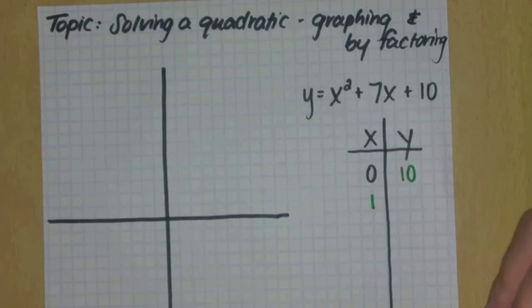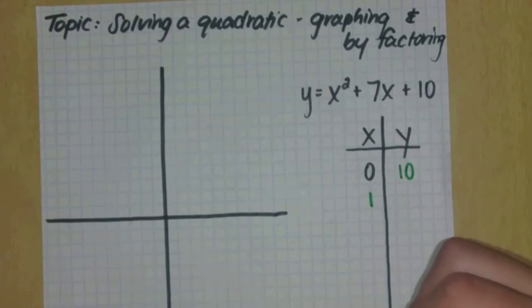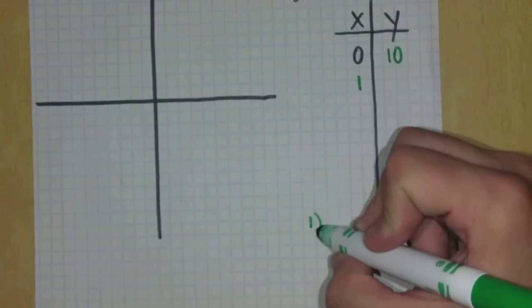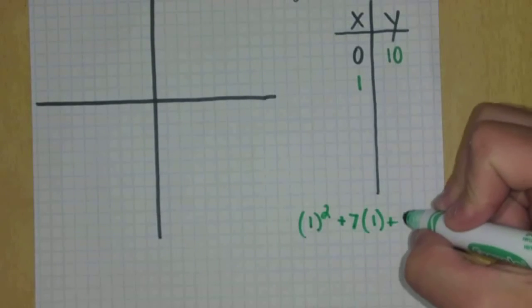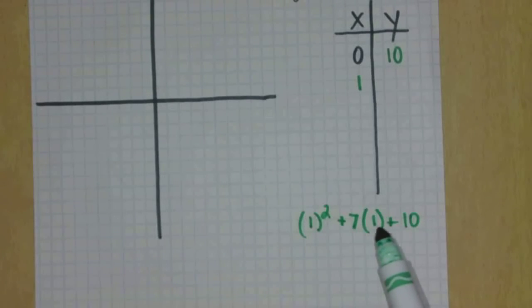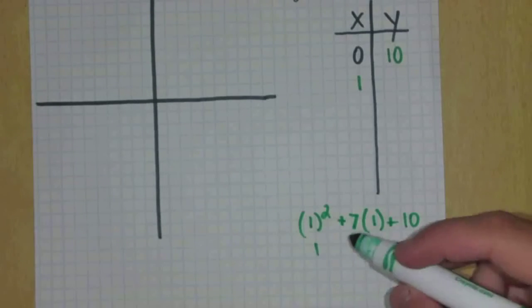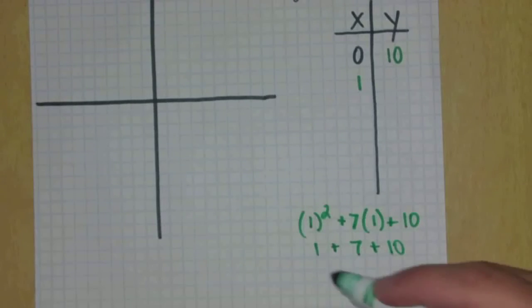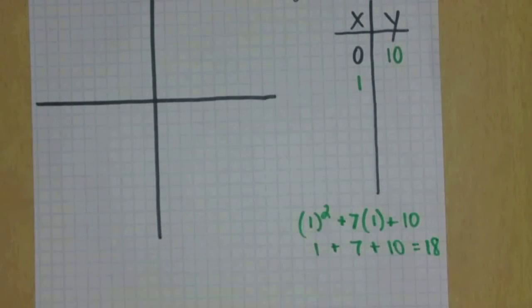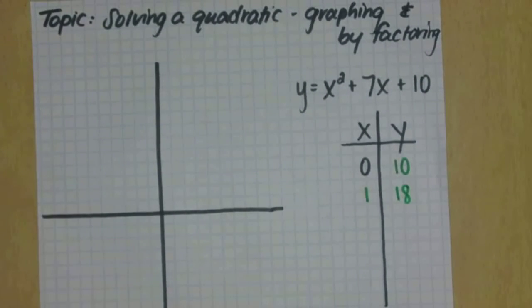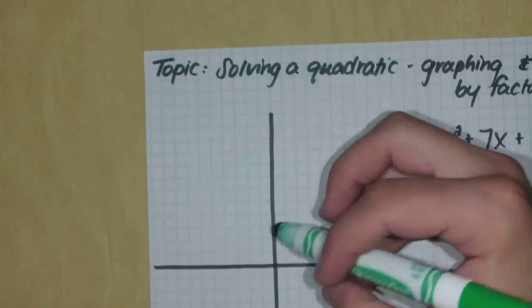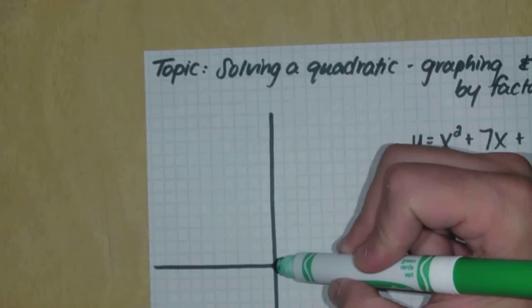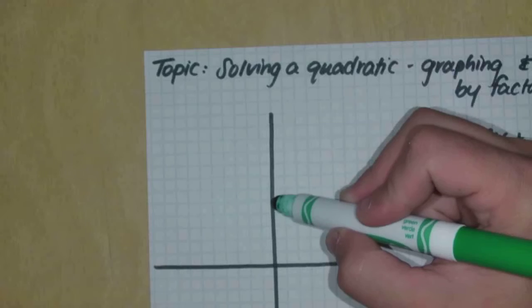Normally I try small positive numbers, so let's try X equals one. I like to plug everything in using parentheses — especially if you're using a calculator, you could type it all in directly. One squared is one, seven times one is seven, and the ten is unchanged. When I add all that up I get eighteen, so when X is one, Y is eighteen. Graphing those two points: zero-ten means I go up ten on my y-axis.